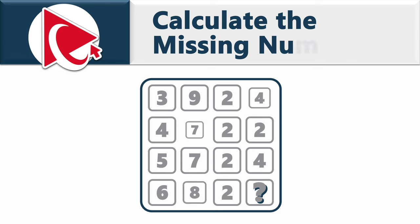You are presented with a square which has 16 numbers inside, and one number is missing. The numbers start from the upper left corner: 3, 9, 2, and 4 in the first row; 4, 7, 2, and 2 in the second row; 5, 7, 2, and 4 in the third row; and the last row contains numbers 6, 8, 2, and then the missing number.